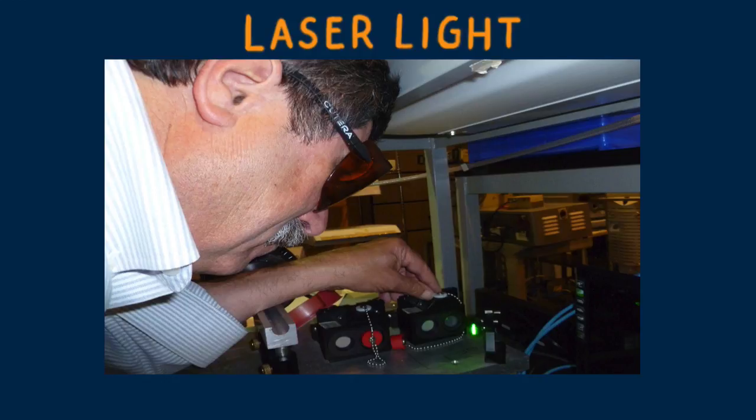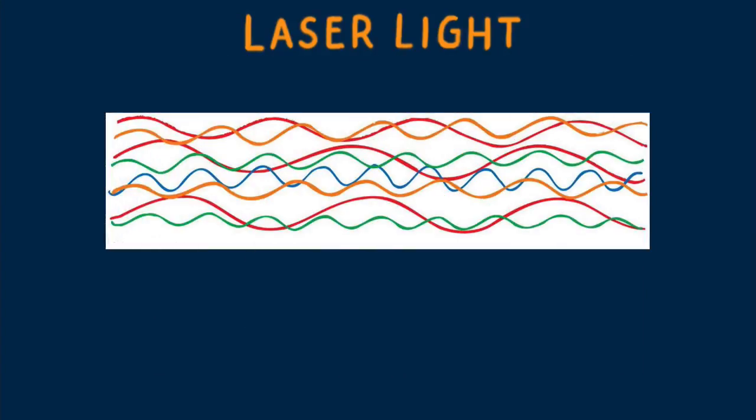To understand a laser, we must first discuss coherent light. Incandescent light is incoherent. It's chaotic. A beam of incoherent light spreads out after a short distance, becoming wider and wider and less intense with increased distance.